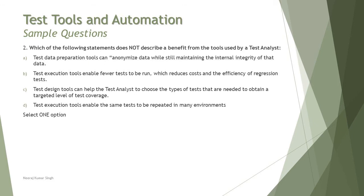Option A states that test data preparation tools can anonymize data while still maintaining the internal integrity of the test data — that is a valid benefit we discussed in the previous tutorial. Option B states that test execution tools enable fewer tests to be run, which reduces cost and efficiency of regression testing. When using manual testing, we try to reduce the number of test cases because it takes a lot of time, but with tool support and automation, we talk about repeatability and running tests quite often.